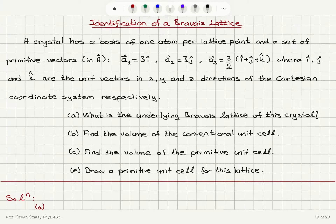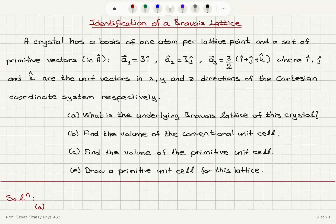Identification of a Bravais lattice. A crystal has a basis of one atom per lattice point and a set of primitive vectors in Angstroms. The a1 vector is 3i-hat, a2 vector is 3j-hat, and a3 vector is (3/2)(i-hat + j-hat + k-hat), where i-hat, j-hat, and k-hat are unit vectors in x, y, and z directions respectively. What is the underlying Bravais lattice? Find the volume of the conventional unit cell, the primitive unit cell, and draw a primitive unit cell.